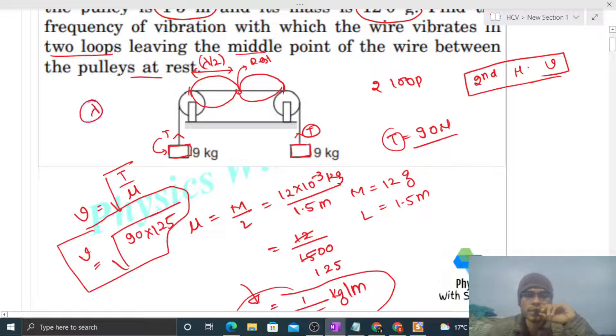So we can say the length of the wire between the pulleys will be simply the wavelength. This is wavelength by 2, and this is also lambda by 2. Right?